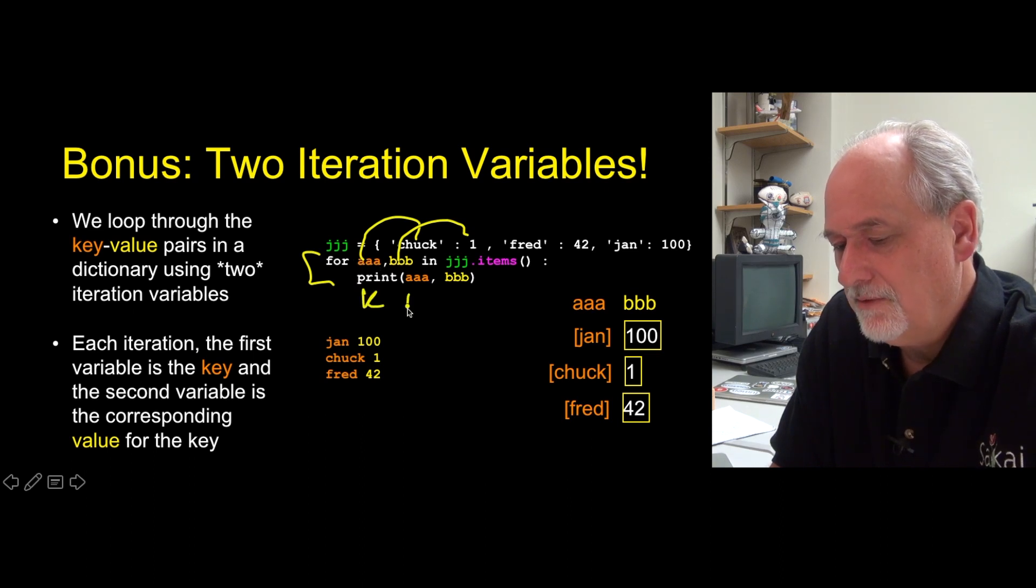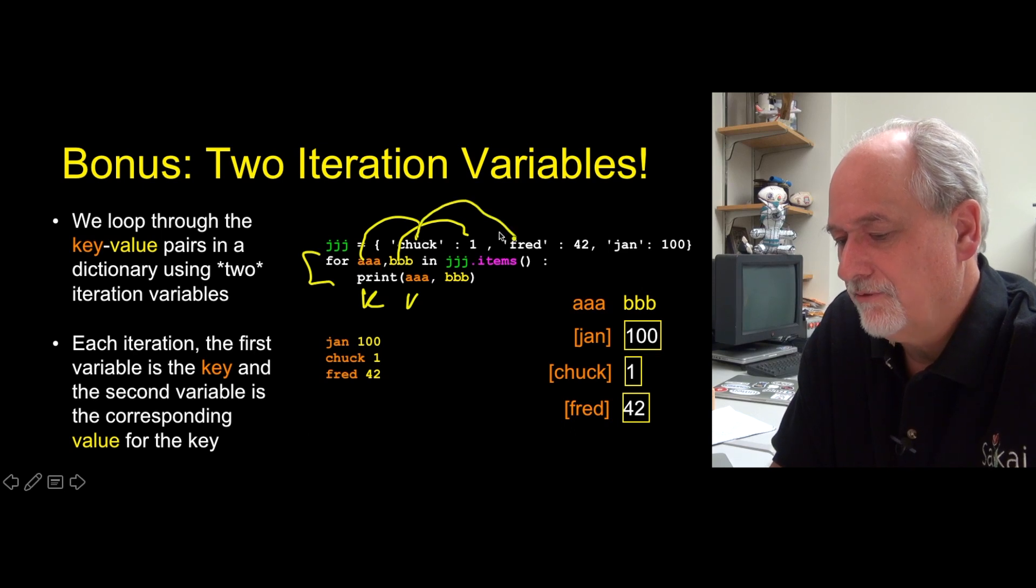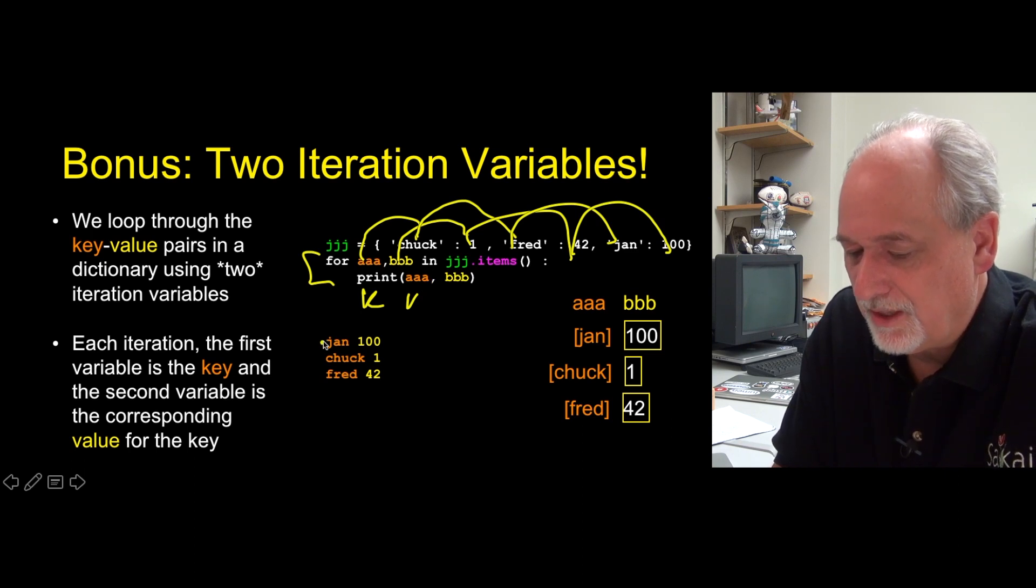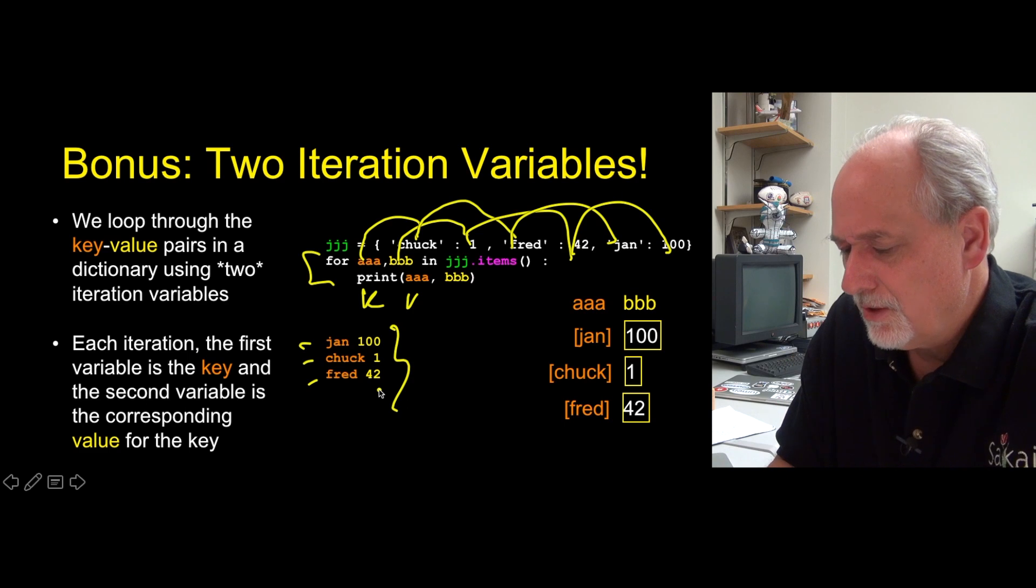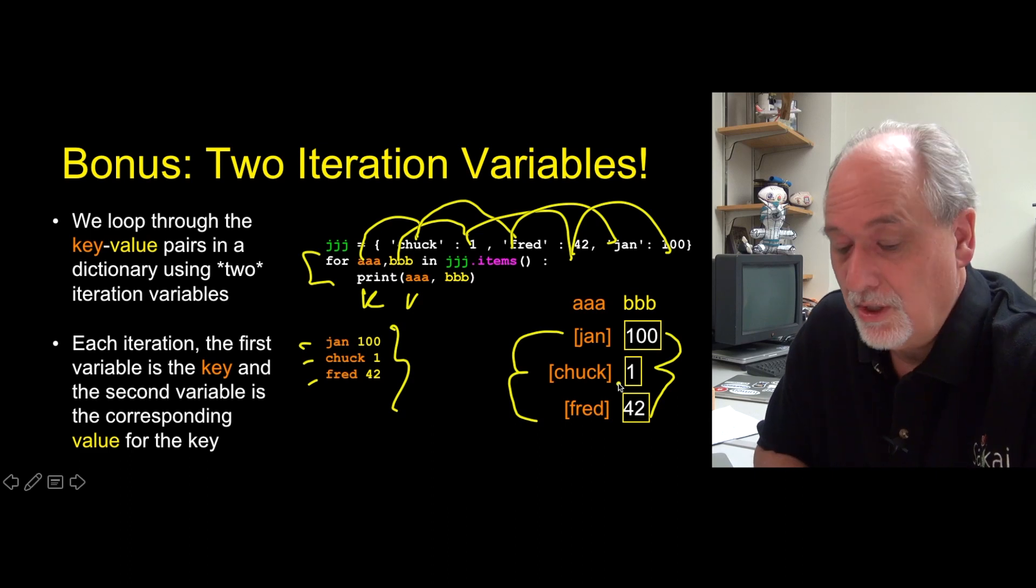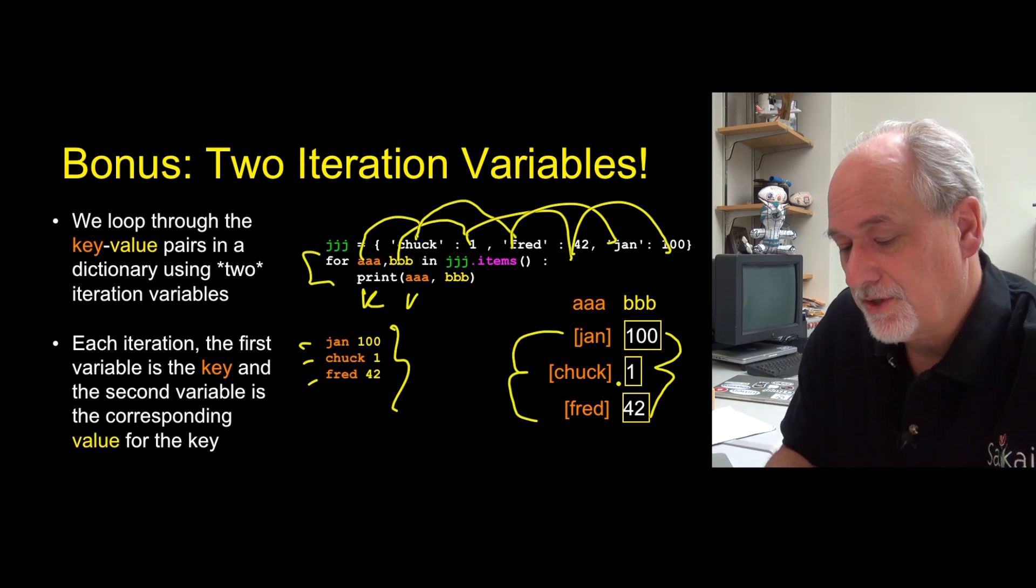So what this basically does is says we're gonna simultaneously advance these two iteration variables. So this is gonna be the key and the value. The K and the V. Key and the value is gonna be Chuck one. Then they're both going to advance. Fred 42, Jan 100. And so that means in this simple loop if we just print them out we're gonna get the key value pairs. Of course in the order. And so it's sort of AAA and BBB simultaneously walk down these key value pairs. And so that's really pretty and it makes for a very succinct loop.